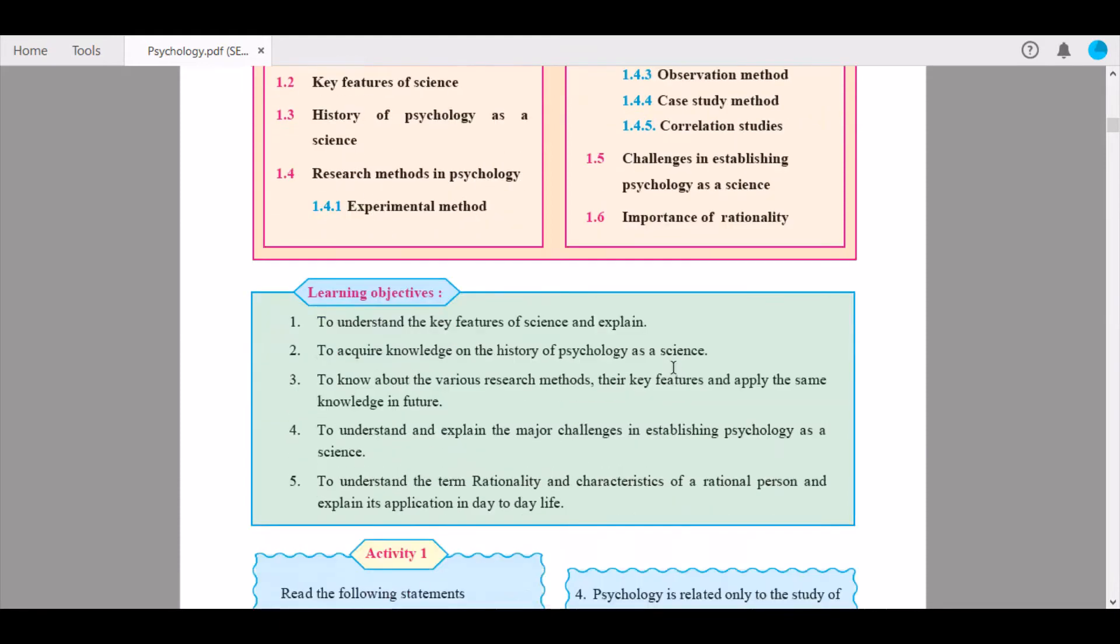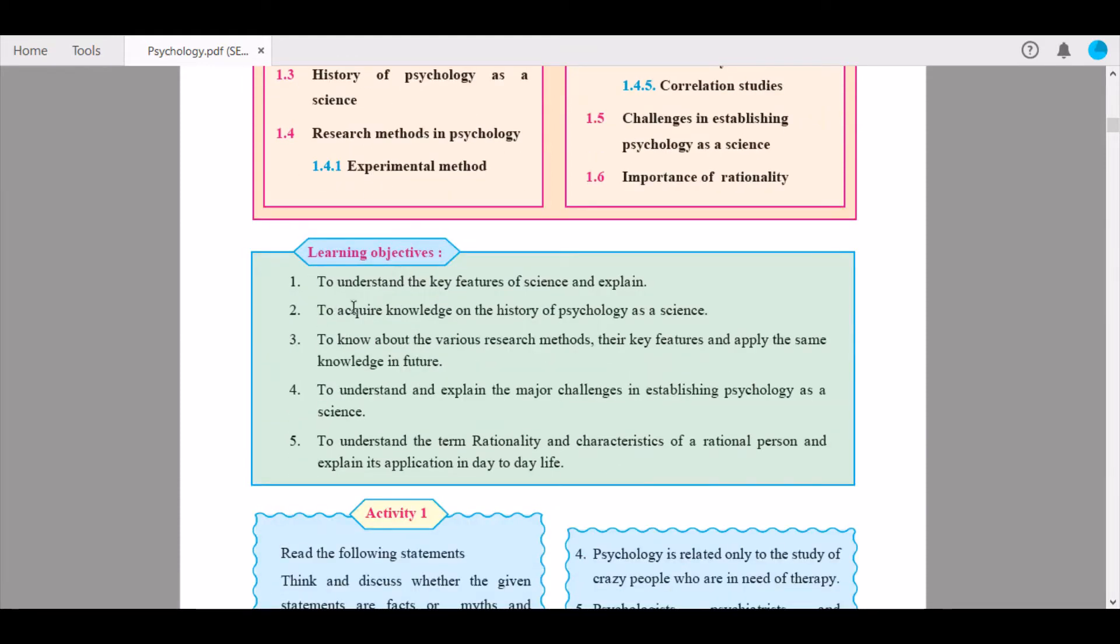Here are some learning objectives that describe the chapter in five points: first, to understand the key features of science and explain it; second, to acquire knowledge on the history of psychology as a science; third, to know about the various research methods and apply the same knowledge in the future; fourth, to understand and explain the major challenges in establishing psychology as a science; and fifth, to understand the term rationality and its application in our day-to-day life.